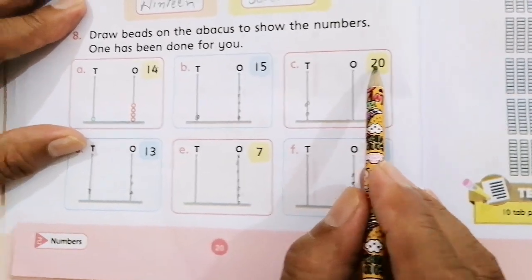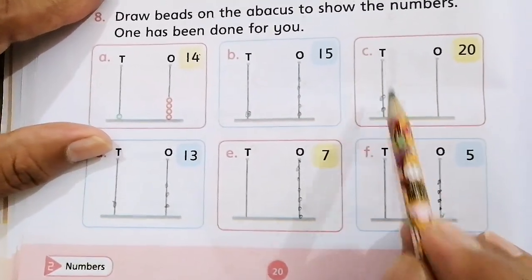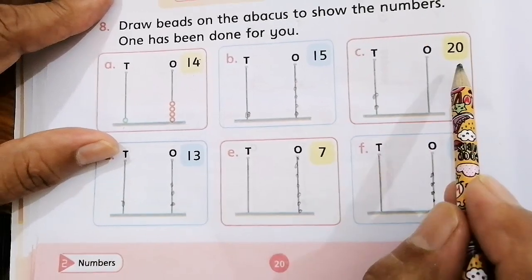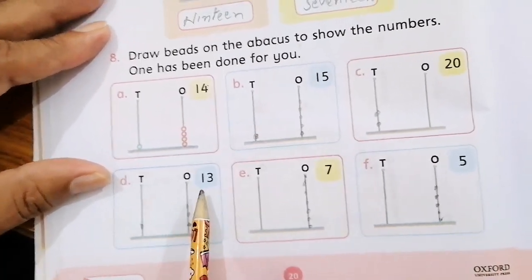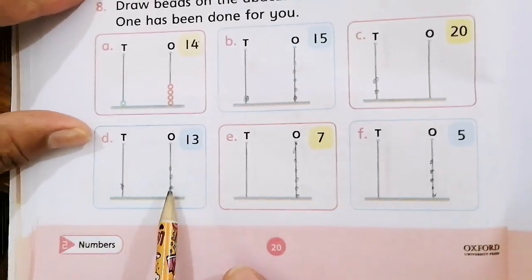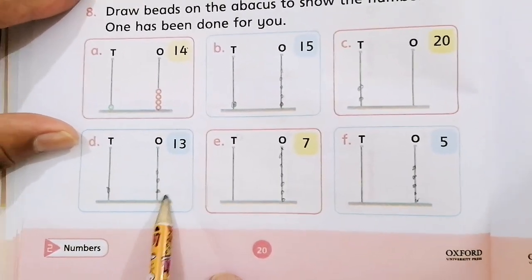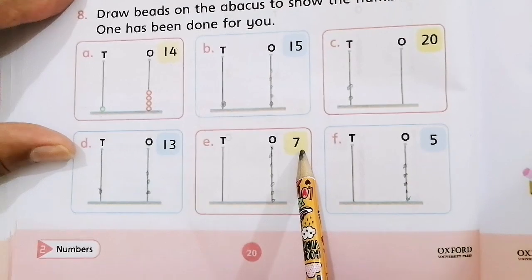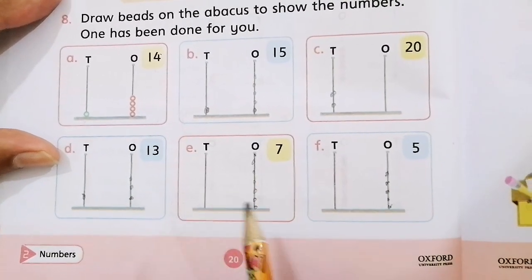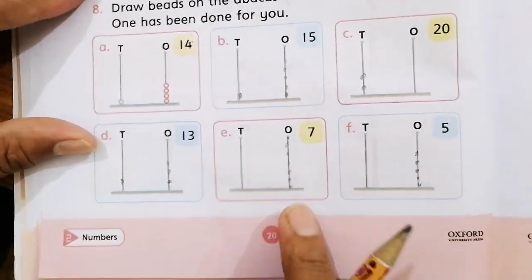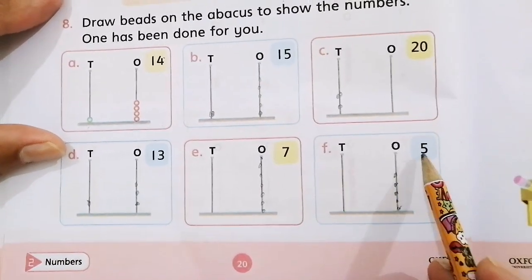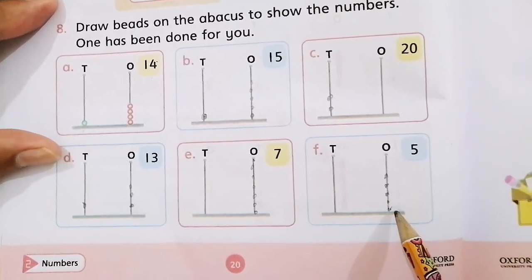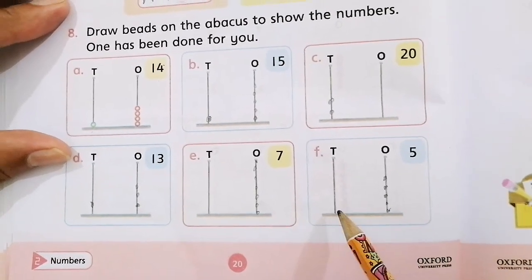For C, left side, 2 on the tens place and no one on the ones place, then zero. So this is 20. D part is tens place 1 bead and ones place 3 beads, so 13. In E, there is only 7, so tens place has no beads and we have 7 beads on the ones place. In F, there are no beads on the tens place and 5 beads on the ones place.